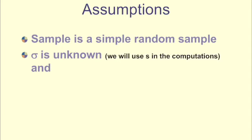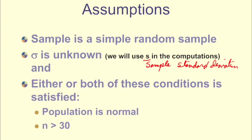First, our assumptions are that our sample is a simple random sample. Our standard deviation is unknown, and we're going to use s. That's our sample standard deviation in our computations. And either or both of these is true.